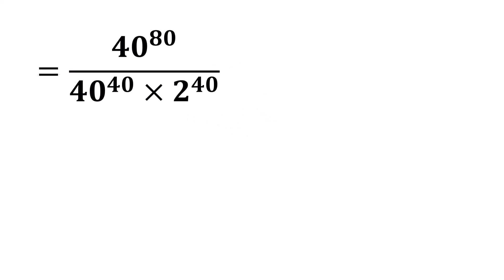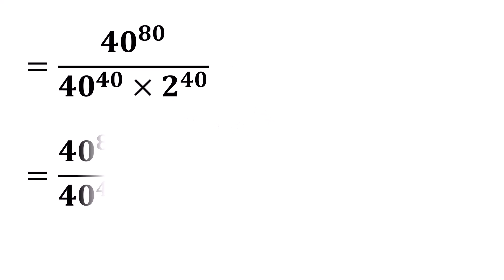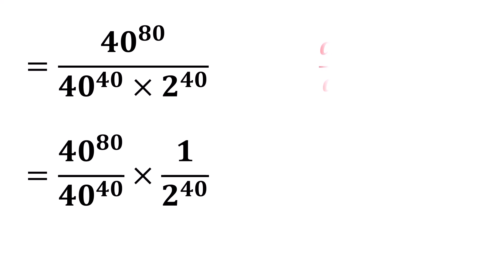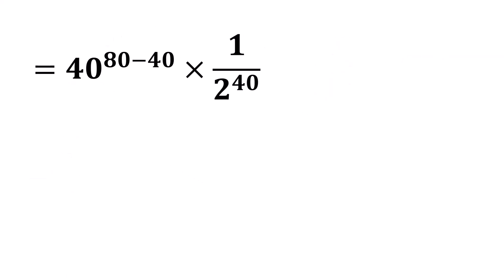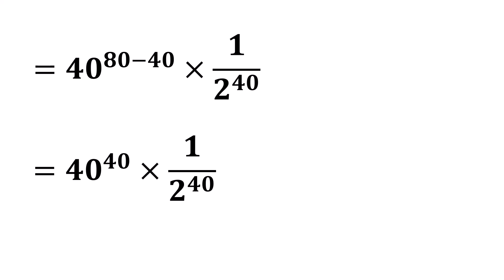We can write this expression as 40 to the power 80 divided by 40 to the power 40, times 1 over 2 to the power 40. Again, applying the exponential rule that says a to the power m over a to the power n equals a to the power m minus n, we can now rewrite the expression as 40 to the power 40 times 1 over 2 to the power 40.